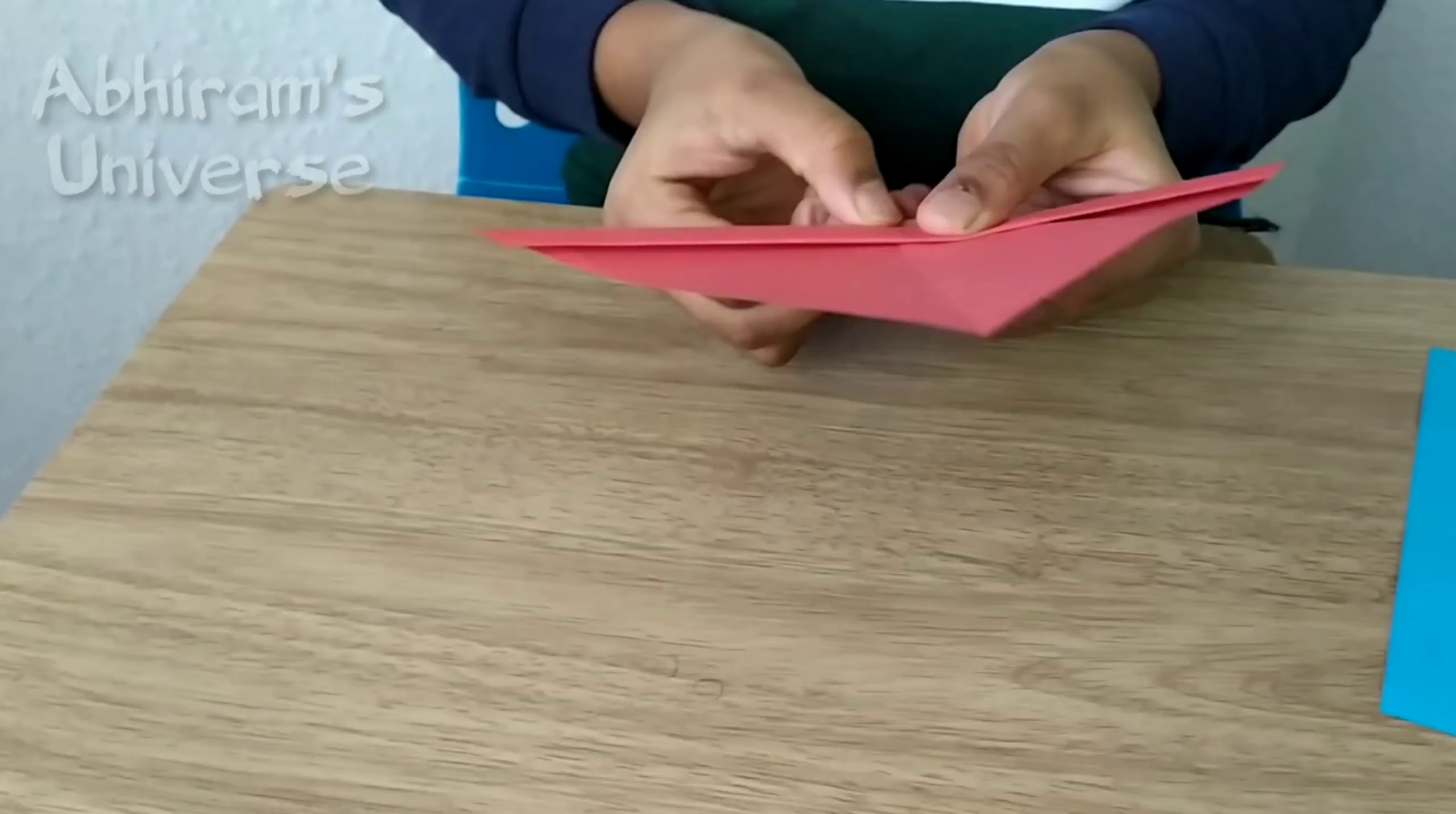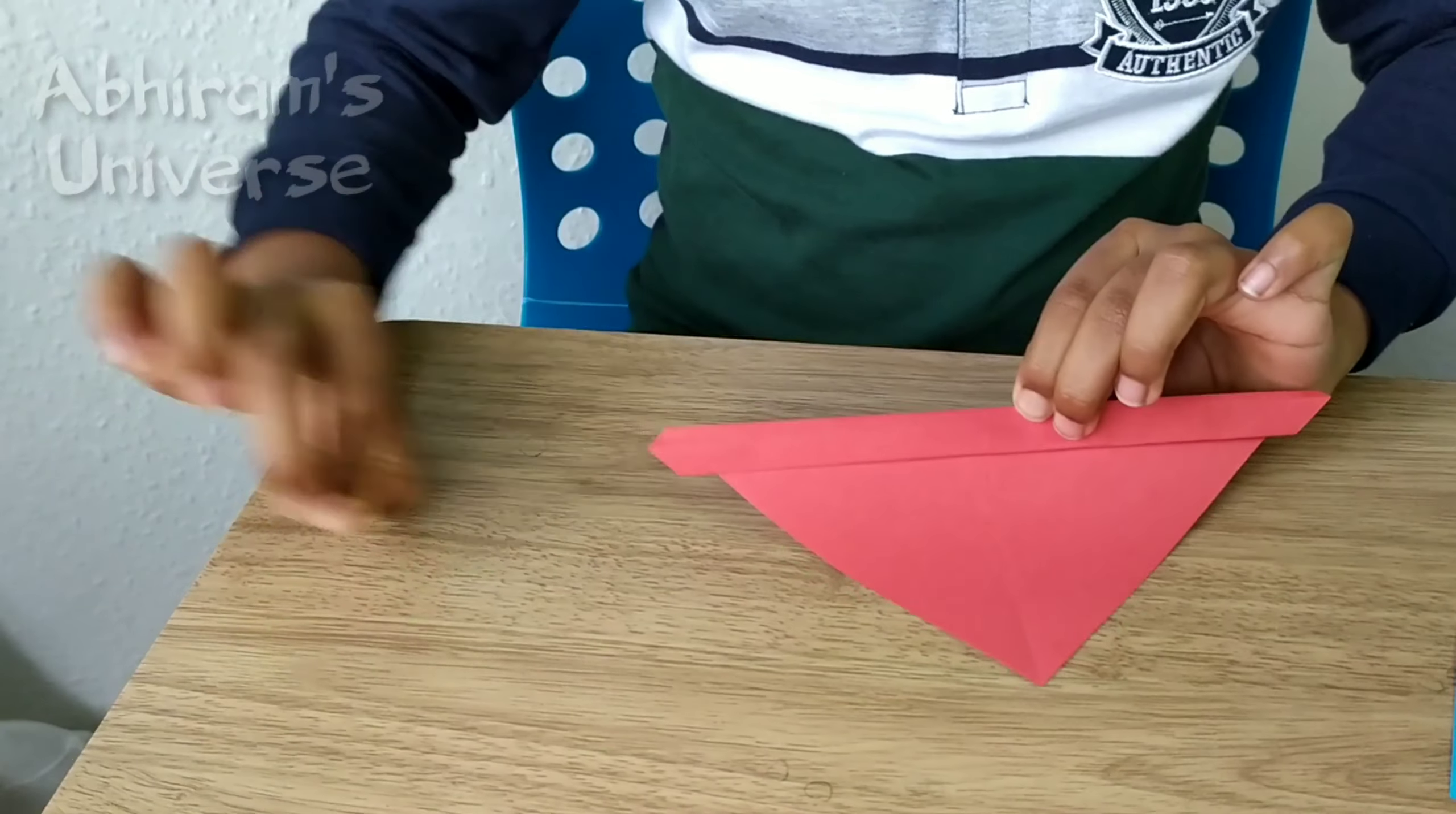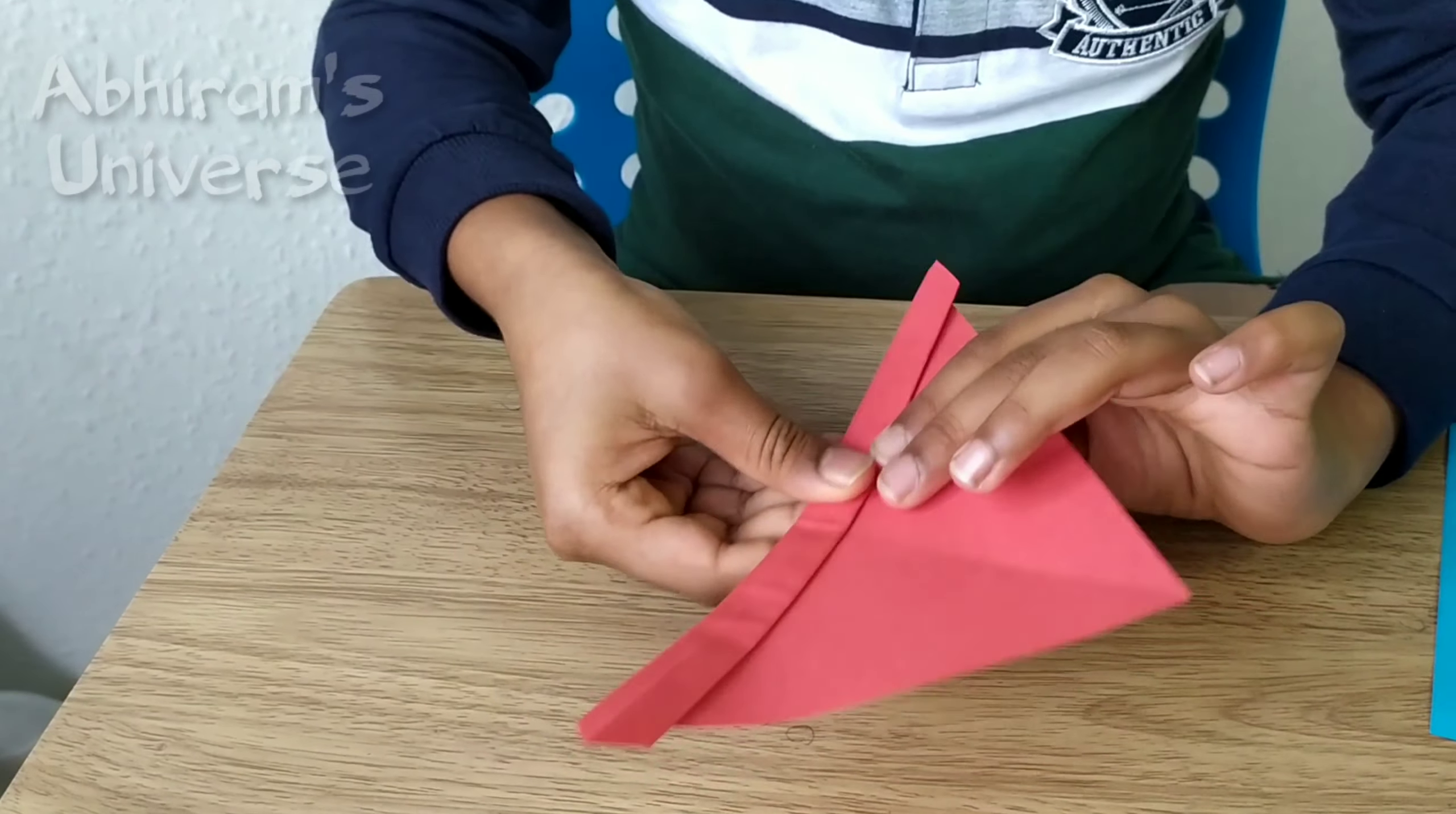And now what you have to do is put a sharp crease on it. Then you will need to take it like this and try to make it flatten a bit.